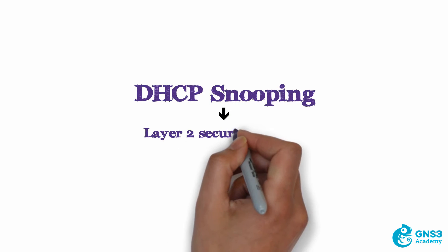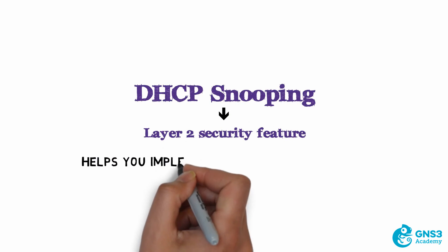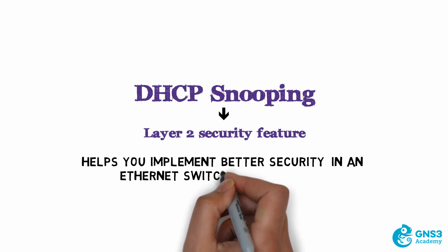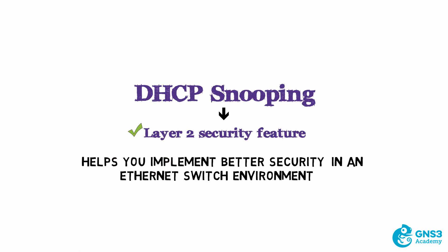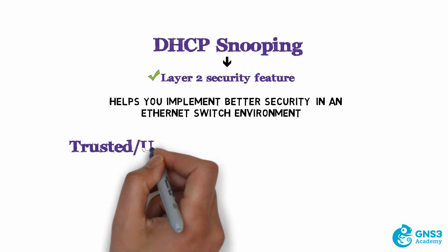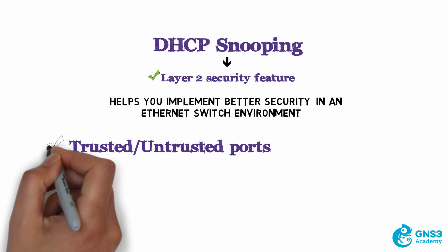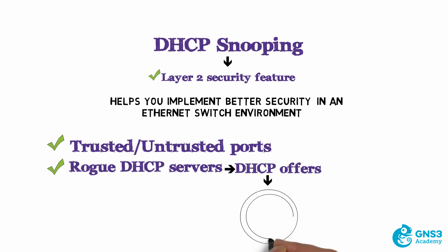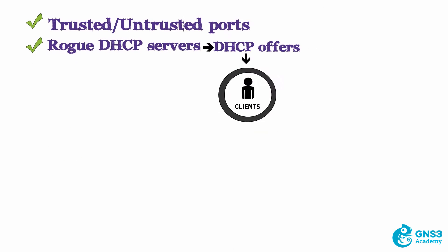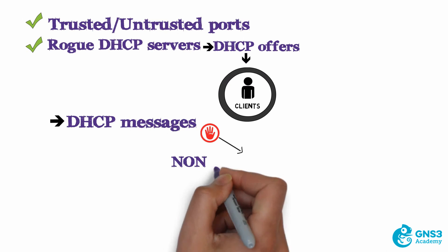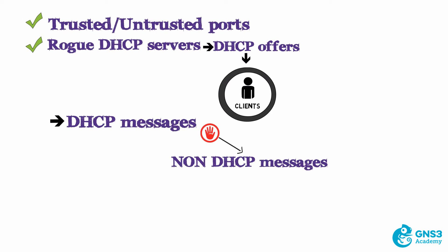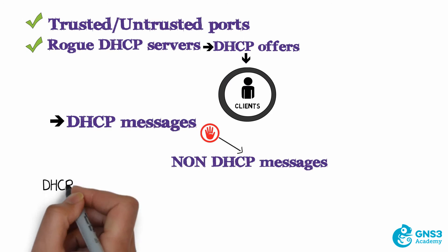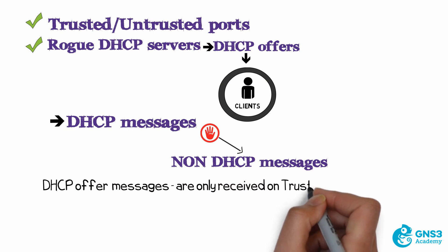DHCP snooping is a Layer 2 security feature that helps you implement better security in an Ethernet switched environment. It validates DHCP messages and allows you to create trusted and untrusted ports, preventing rogue DHCP servers from sending DHCP offers to clients. It essentially looks for DHCP messages and ignores non-DHCP messages, but validates and ensures that DHCP offer messages are only received on trusted ports.